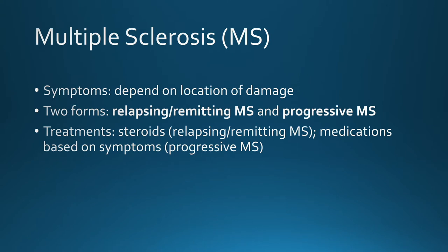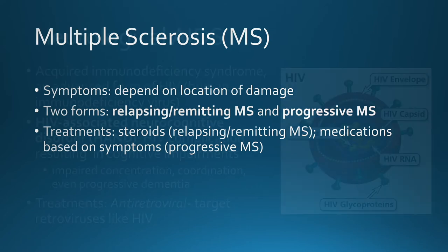The symptoms of MS vary among individuals because the site of damage differs. The spinal cord, cerebellum, and optic nerve are commonly affected. Problems can result in symptoms like numbness, clumsiness, blurred vision, slurred speech, weakness, pain, loss of coordination, uncontrollable tremors, loss of bladder control, memory loss, and so on.